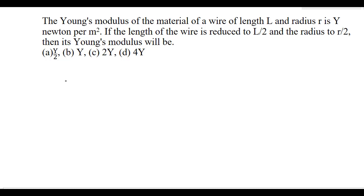The Young's modulus of a material of a wire of length L and radius R is Y Newton per meter square. If the length of the wire is reduced to L/2 and the radius to R/2, then its Young's modulus will be?